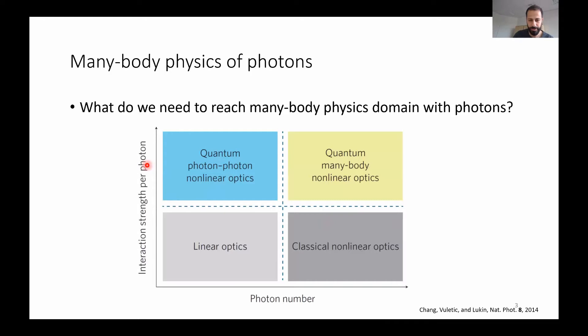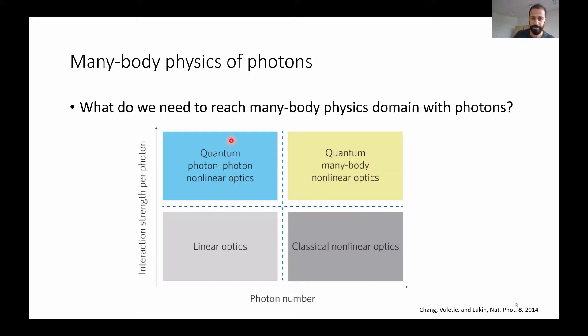This figure classifies optics by photon number and interaction strength per photon. If photons are not interacting and you have very few photons, you're in linear optics — refraction, diffraction. As you increase photon number with weak interaction, you reach classical nonlinear optics: soliton propagation, four-wave mixing. With few photons but very strong interactions, you reach quantum photon-photon nonlinear optics — cavity QED or circuit QED. Once you have many photons and very strong interaction strength per photon, with many atoms, you reach the realm of quantum many-body physics with nonlinear interactions.